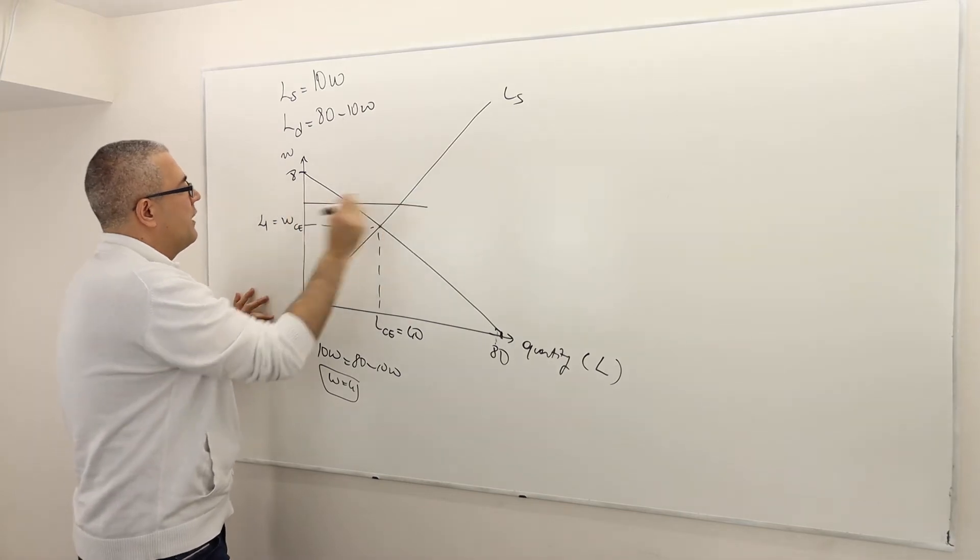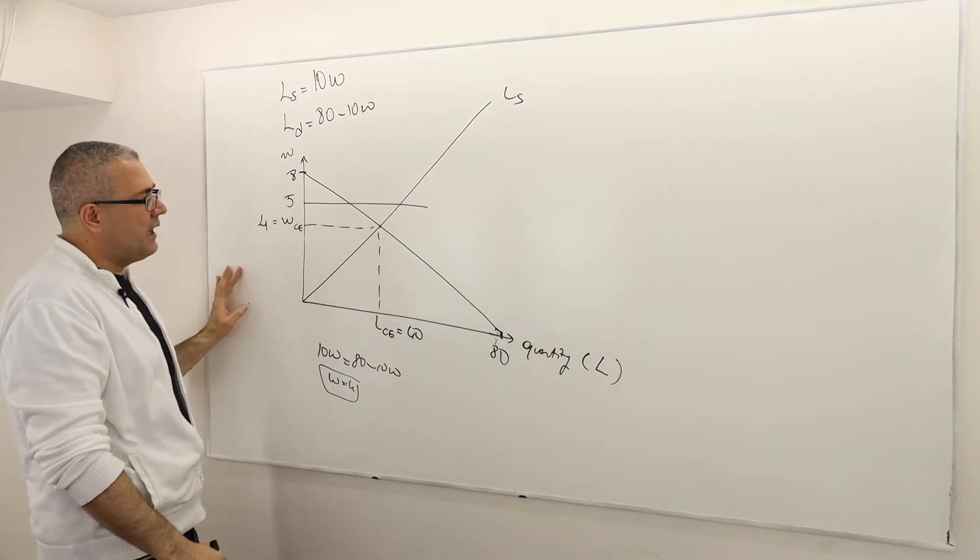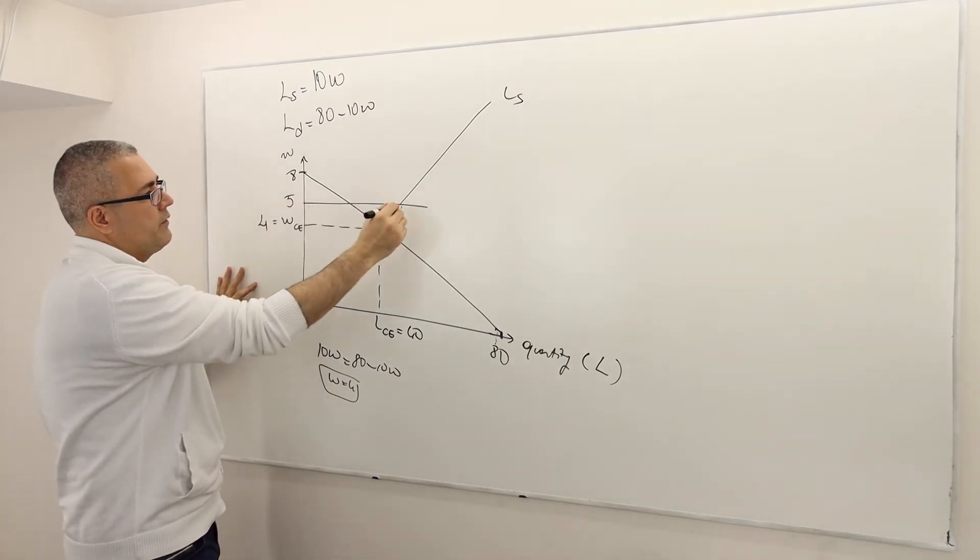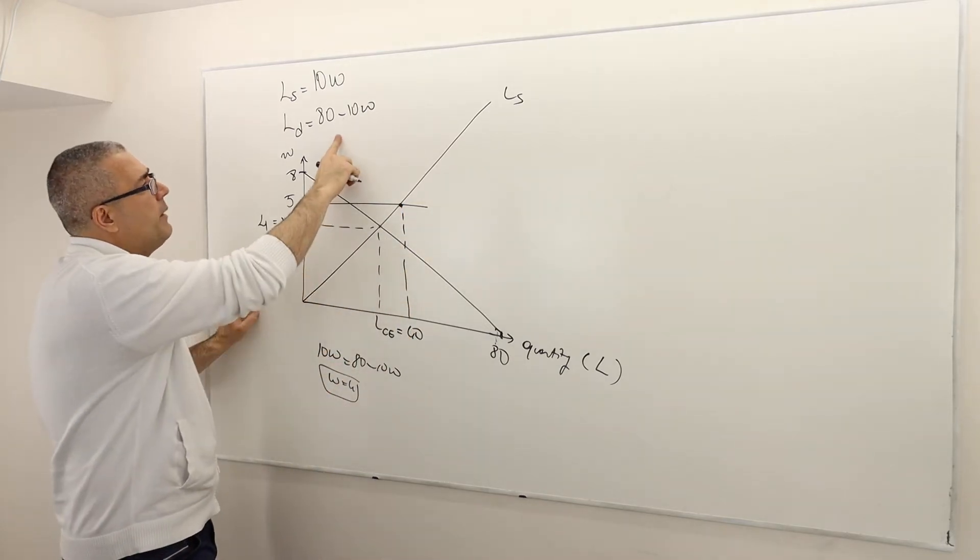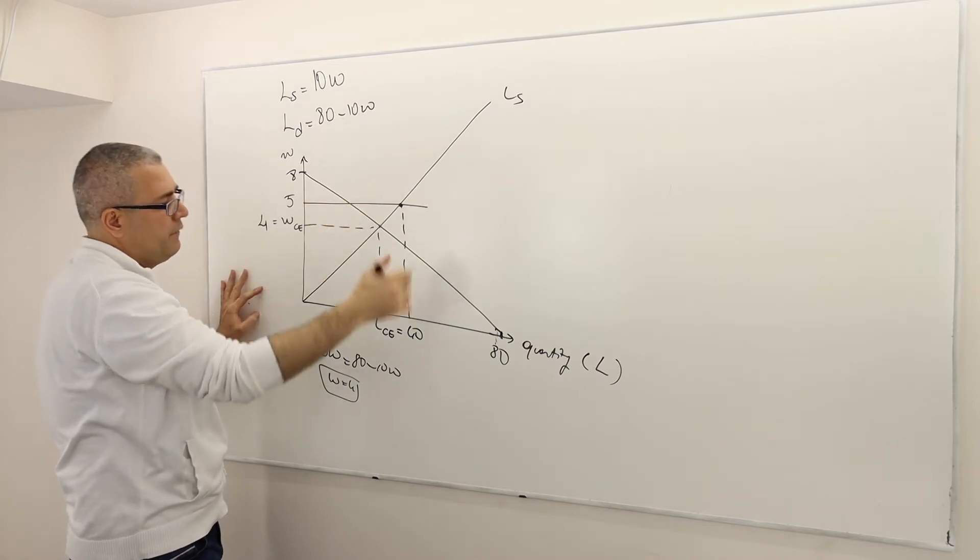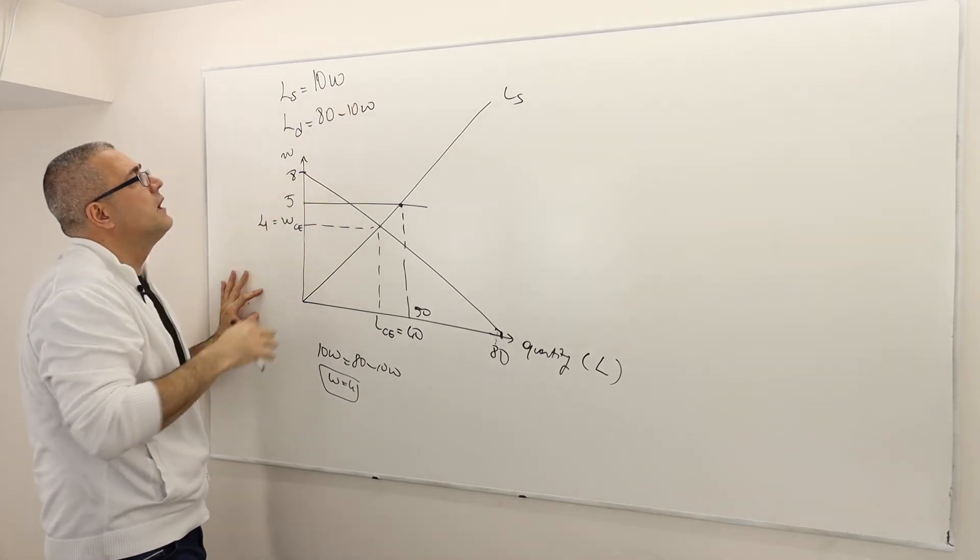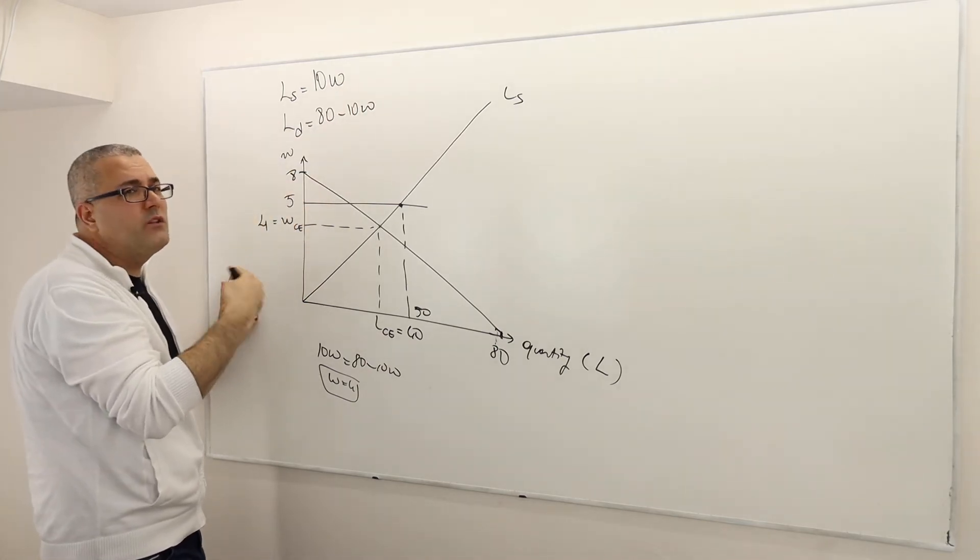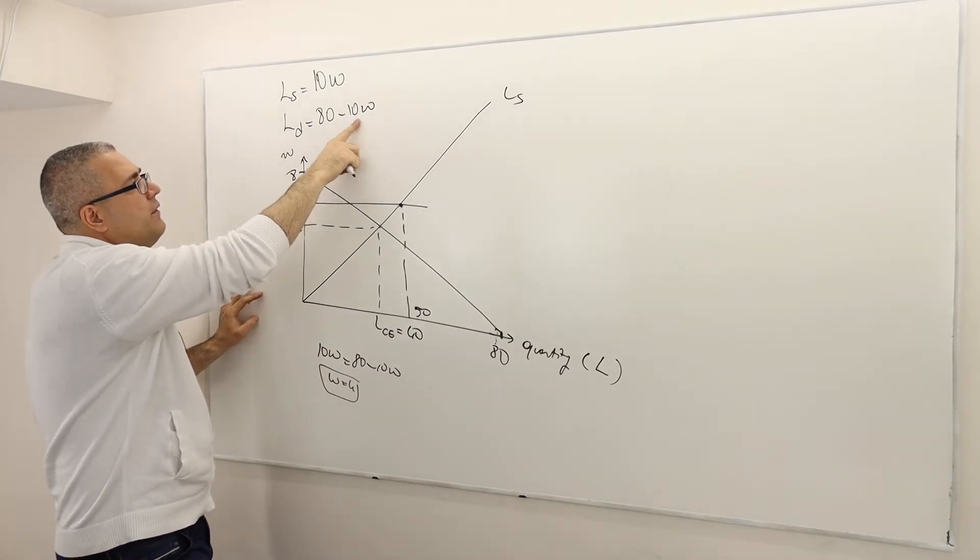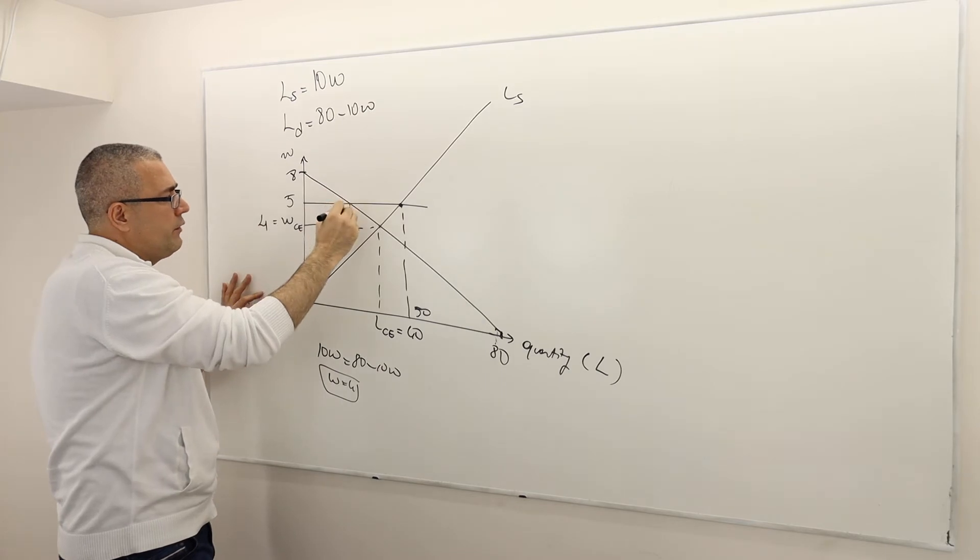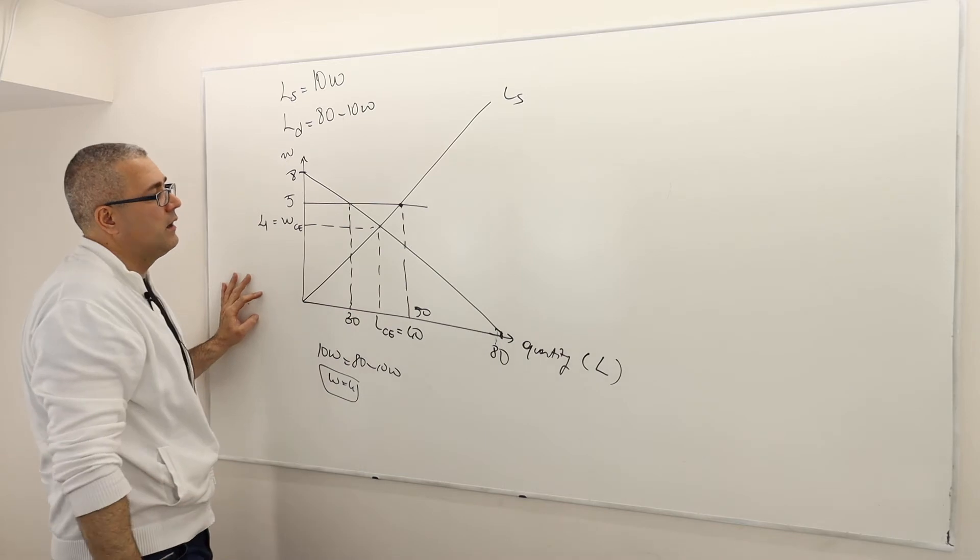So the minimum wage is now $5. I put this on purpose. What does that mean? That means at this price level, obviously, there's going to be a lot of people who would like to work. How many? 50 of them. So 50 people are actually willing to work. But the problem is the demand, the firms do not want to hire that many workers. Because the price is now 5, that means 80 minus 50, so 30. Only 30 firms or 30 units of workers will be demanded.